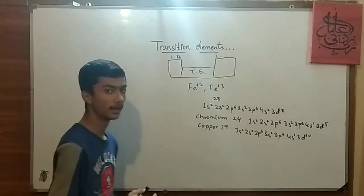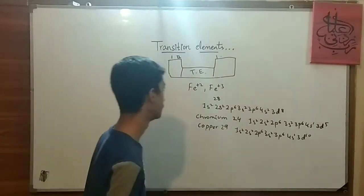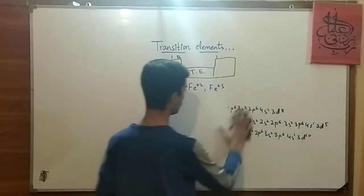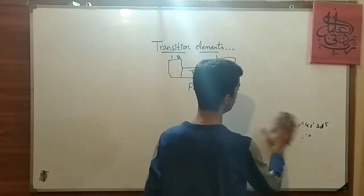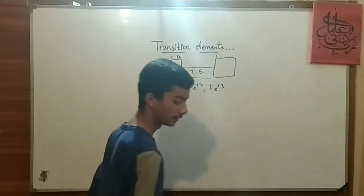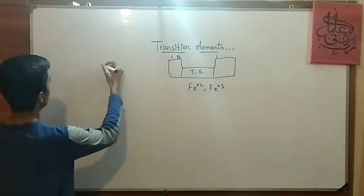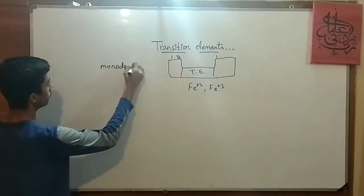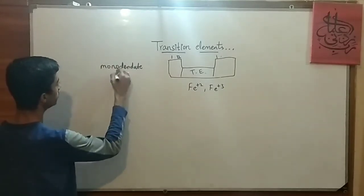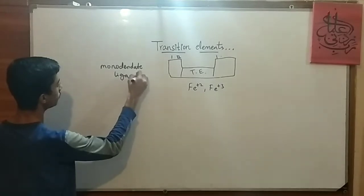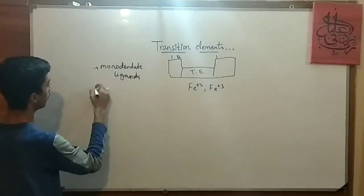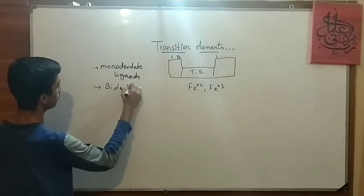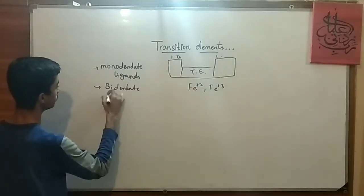Now there's another thing in our series, it's about the ligand. What basically is the ligand? There are two types of ligand: monodentate ligands and bidentate ligands.